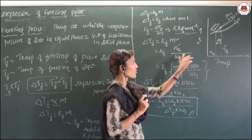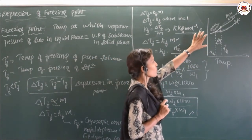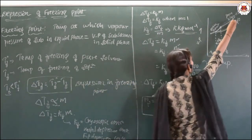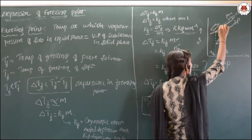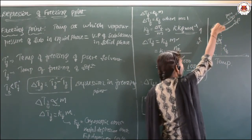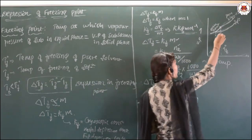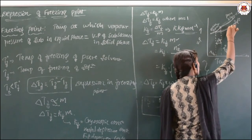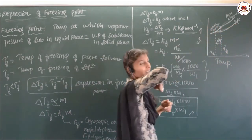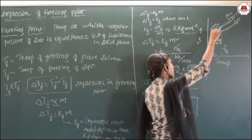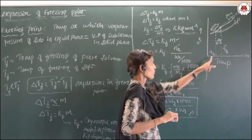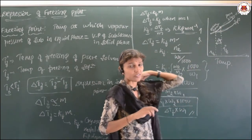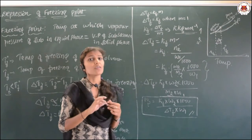For the graphical representation: draw vapour pressure versus temperature. The curve for the pure liquid solvent reaches the frozen solvent curve at Tf°. The solution curve touches the frozen solvent curve at the lower temperature Tf, and the difference delta Tf is the depression in freezing point.